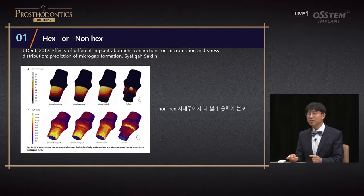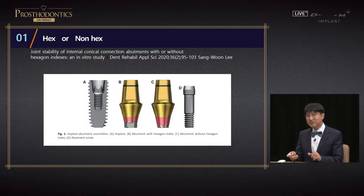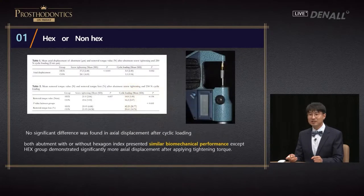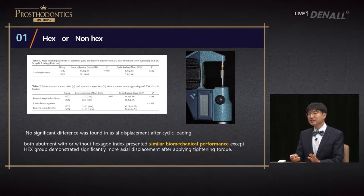This is a study done by Gangneung Wonju University. Will axial displacement be different for hex and non-hex abutment? It was connected by 10 Newtons — about the tightening you get with your fingers. When 30 Newtons of additional torque was applied, axial displacement was 9 micrometers bigger for hex abutments. This is statistically meaningful. However, no significant difference was found in axial displacement after cyclic loading. Both types of abutments show similar biomechanical performance levels.